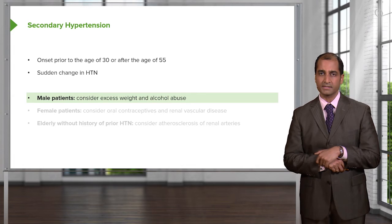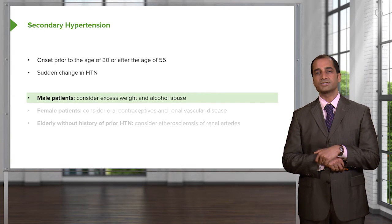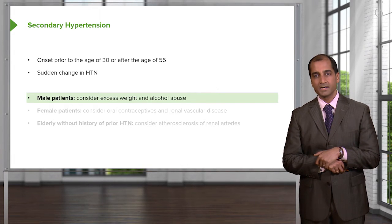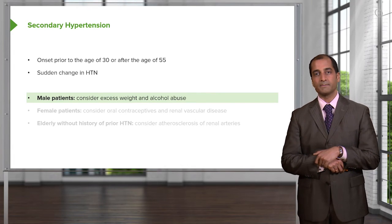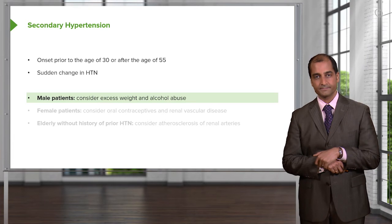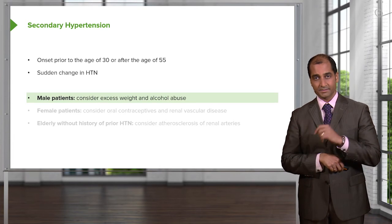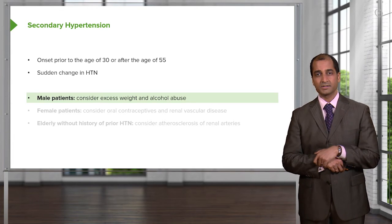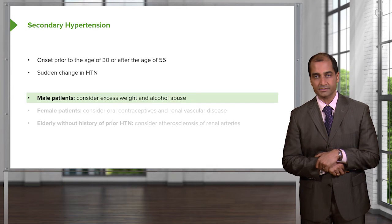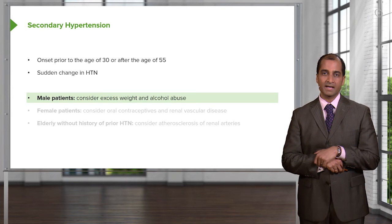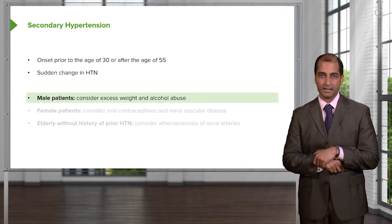What's atherosclerosis mean? Accumulation of lipid. Where might this be taking place? It might be taking place in the renal vasculature. You will see how, if there's a blockage of the renal vasculature, then it may result in secondary hypertension.